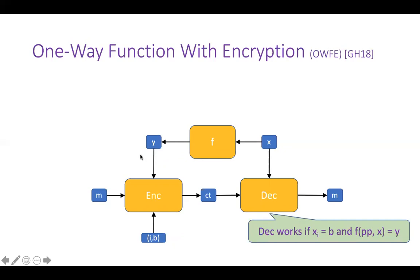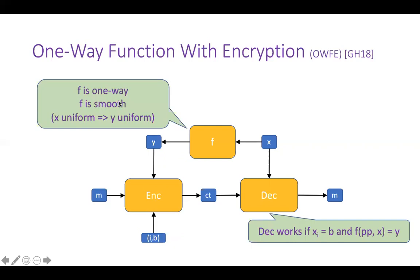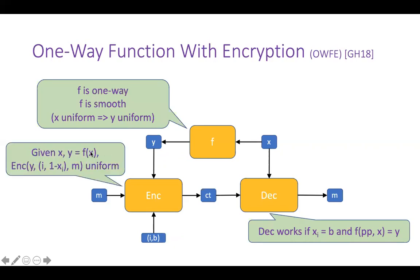For the security part, f has to be one-way, and f has to be smooth — meaning if x is sampled from a uniform distribution, then the corresponding y should also resemble a uniform distribution. For the security of encryption, if the adversary has a value x and the ciphertext is encrypted with respect to image y, and the encryption is with respect to the opposite bit of x, then the ciphertext should look uniform to the adversary. Essentially, if the adversary doesn't have the right decryption key, the ciphertext should look uniform.